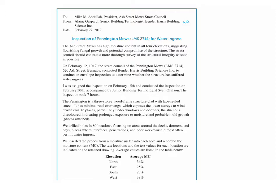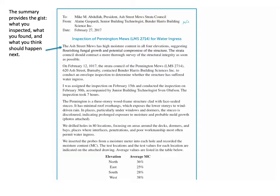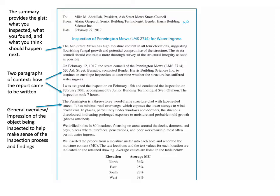Here we're taking a look at an example — an inspection of Pennington Muse for water ingress. You can pause to read through it. The summary provides the gist of what was inspected, what was found, and what they think should happen next. Then there are two paragraphs of context describing how the report came to be written. If it's appropriate to have two paragraphs, go ahead — just because it says a paragraph doesn't mean you have to stick to one. Then there's a general overview or impression of the object being inspected to help make sense of the inspection process and findings.